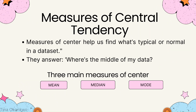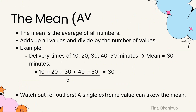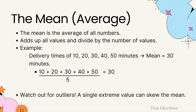Let's start with the mean — you probably know this as the average. You take all the numbers, add them up, and divide by how many numbers there are. Imagine you run a delivery company checking delivery times for five orders: 10, 20, 30, 40, and 50 minutes. Add them up: that gives you 150 minutes. Divide by five deliveries — that's 30 minutes.